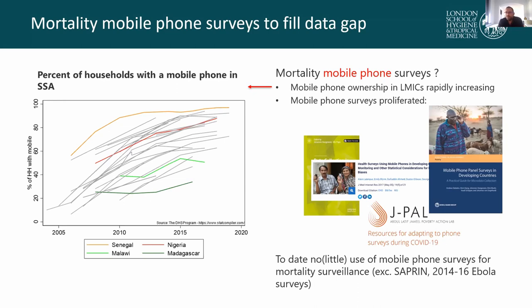Unfortunately, very few mobile phone surveys have actually been used for tracking mortality. There are a couple of smaller subnational projects that make use of mobile phone surveys, such as the SAPREN network in South Africa, and there have been a couple of mobile phone surveys targeting mortality estimates in the context of the Ebola outbreak. But these are relatively small-scale efforts not usually scaled up to the national level.